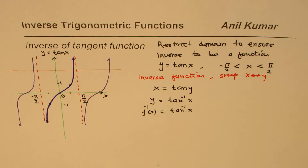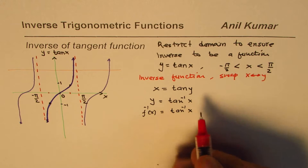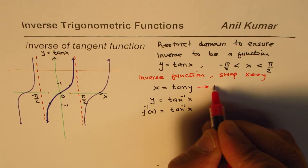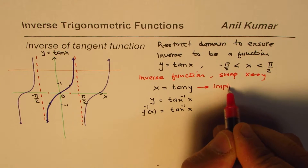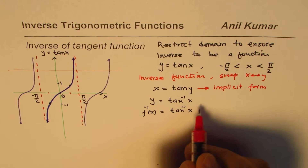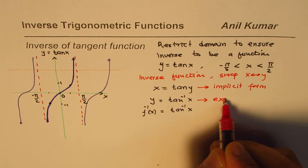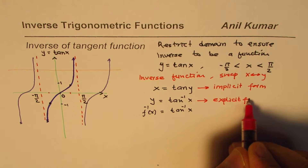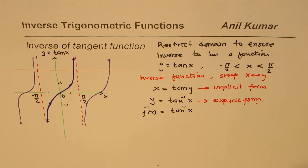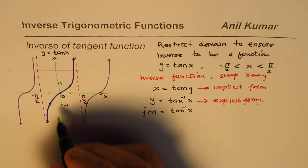When we write it in the form x = tan y, we call this the implicit form. Both representations represent the inverse of the function.